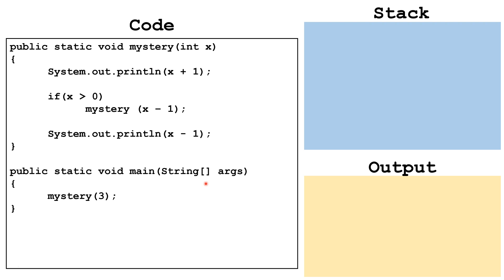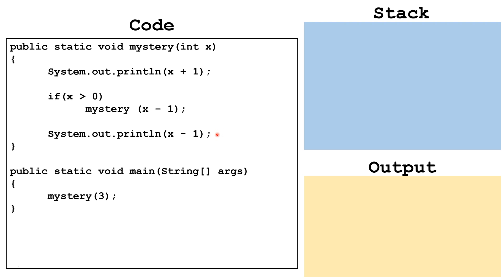Now we will look at a final program where we can use both of the previous techniques. In this program we have processing before the recursive call and also processing after the recursive call. This piece of code will execute as soon as the method is called, whereas this piece of code after the recursive call won't execute until we are moving our way back down the stack.